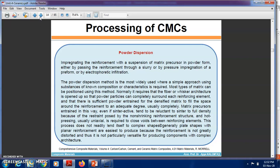A suspension of known composition or characteristics is required. Most types of matrix can be positioned using this method. Normally, it requires that the fibers are in a viscous architecture so that the powder particles can completely surround each reinforcement element, and there is sufficient powder to fill the space around the reinforcement to an adequate degree.